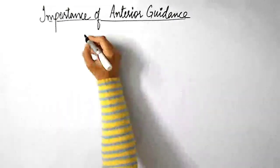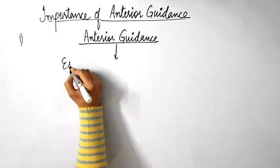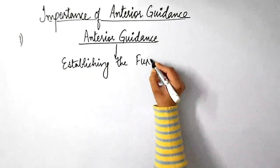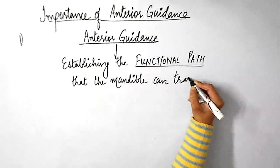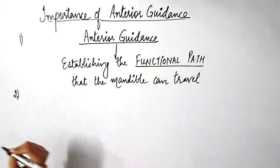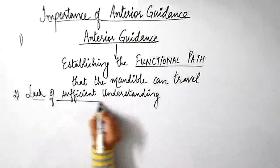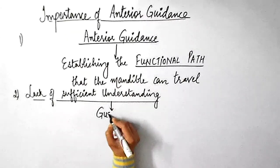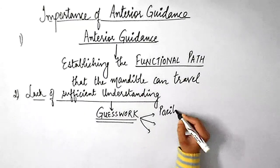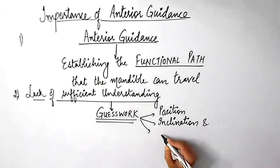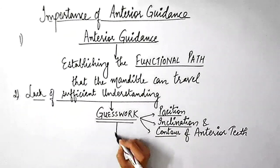Now let's talk about the importance of anterior guidance. The anterior guidance plays a very important role in establishing the functional path that the mandible can travel. Therefore, anterior guidance is one of the vital factors that should be taken into consideration while restoring the occlusion of the patient. Lack of sufficient understanding about anterior guidance would result in guesswork, and guessing at the position, inclination, or contour of anterior teeth is not only time-consuming but also frustrating for both the dentist and the patient.